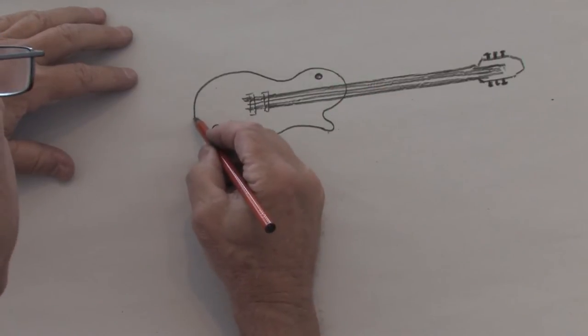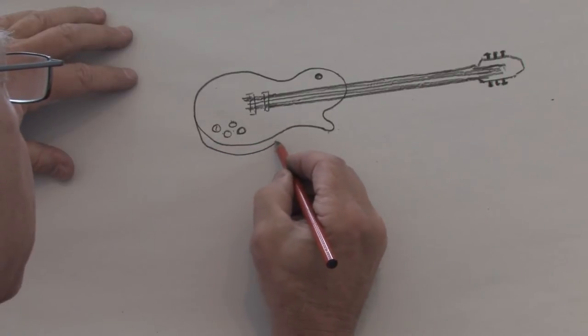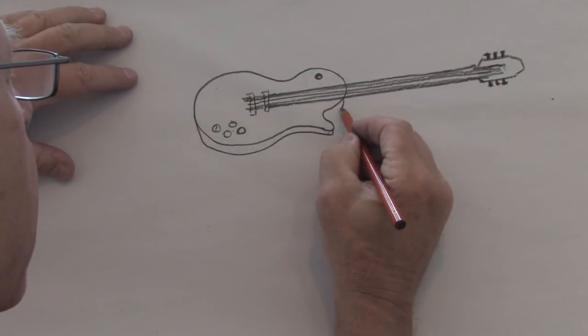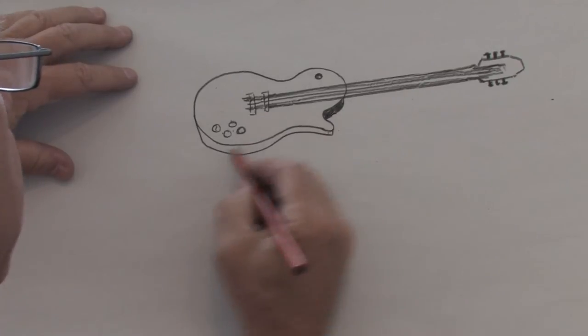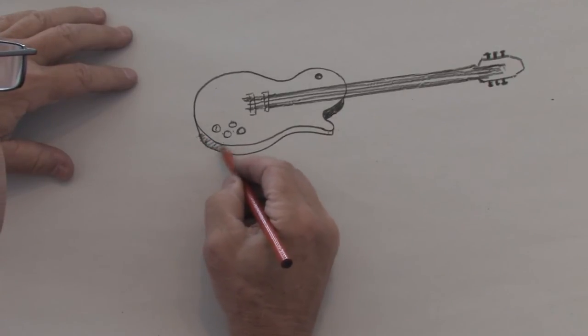Now what I'm going to do is give it a little bit of dimension so that we can see the side of the guitar like this and bring it down like that. I'll put a little shading on that spot to give it some depth.